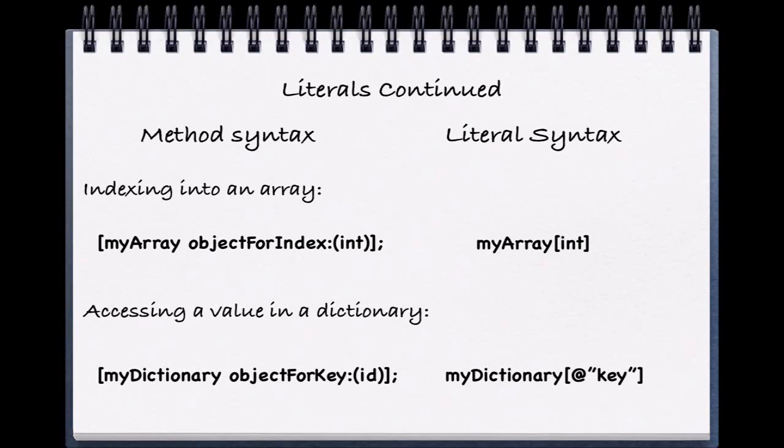Similarly, for dictionaries, we've had to access values in our dictionaries or objects in our dictionaries by using the method objectForKey and we've been able to pass in a key. In our case, it's been a string.